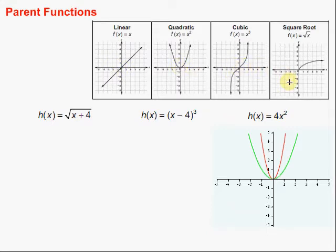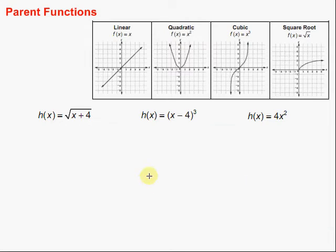So we can use that to help us know what's happening from the parent function to get to another function that's a translation of it, or a transformation of it. So let's first of all take a look at this one. We have h(x) equals the square root of x plus 4. We know that it belongs to the square root family because we have that square root going on.